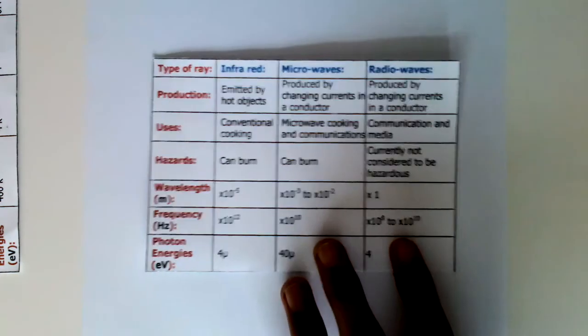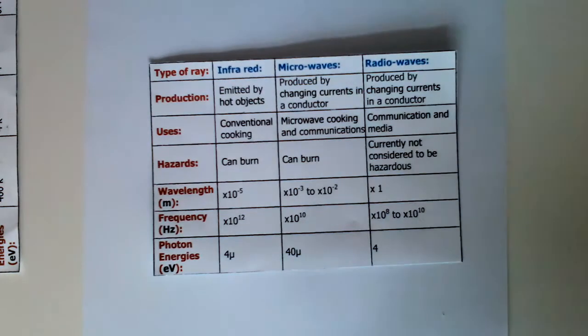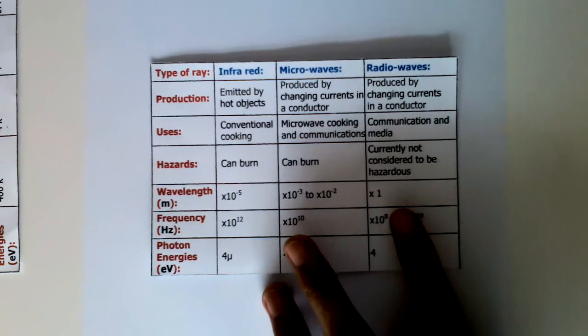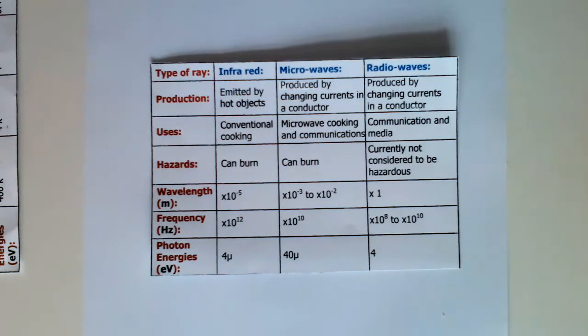And then the next table shows us infrared, microwaves and radio waves. So production is emitted by hot objects, uses conventional cooking, hazards can burn, wavelength times 10 to the minus 5, frequency times 10 to the 12th, and photon energies 4u.